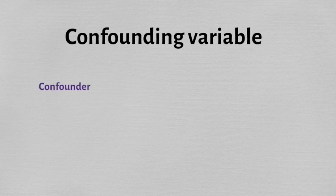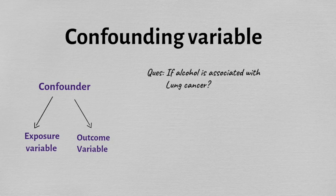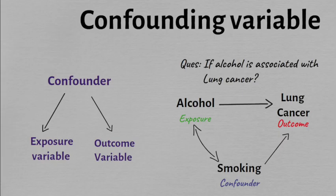A confounding variable is one which is independently associated with both the exposure variable and the outcome variable. For example, if you want to study whether alcohol is associated with lung cancer, a sample of people who consume high levels of alcohol tend to have higher incidence of lung cancer. This could be influenced by a confounding variable like smoking — people who drink heavily are more likely to smoke, and smoking is independently associated with both alcohol consumption and lung cancer, thus confounding their relationship.